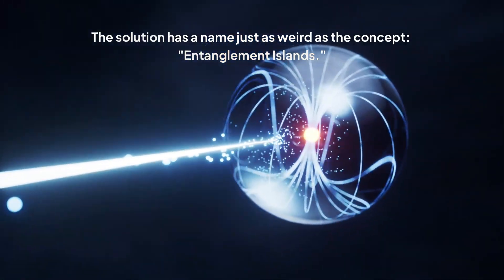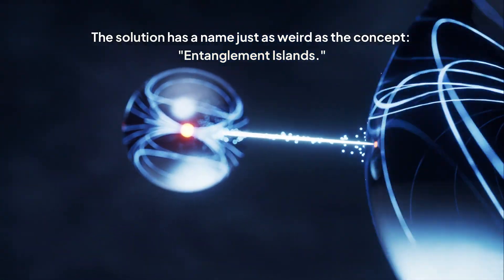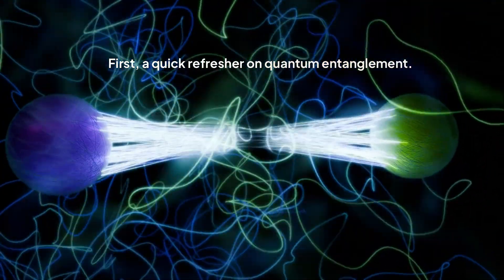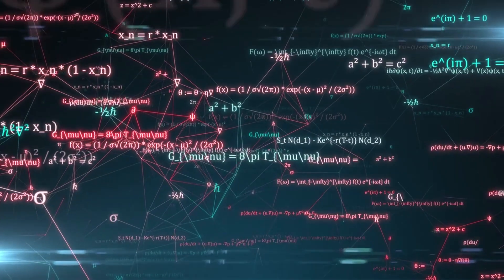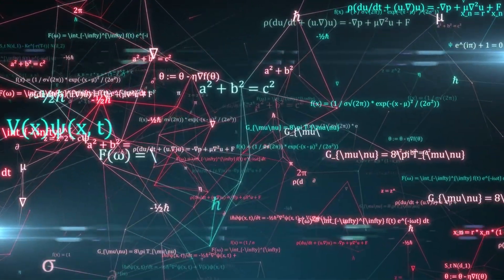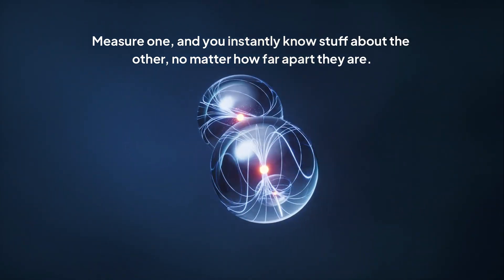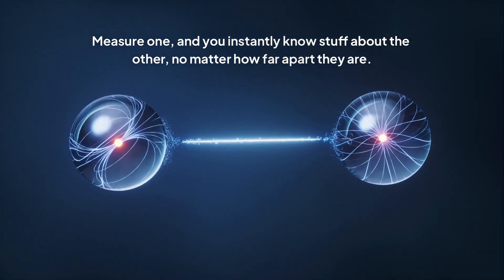The solution has a name just as weird as the concept, entanglement islands. First, a quick refresher on quantum entanglement. Einstein called it Spooky Action at a Distance. It's a link between two particles where their fates are tied together. Measure one, and you instantly know stuff about the other, no matter how far apart they are.